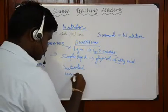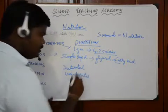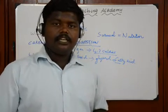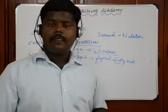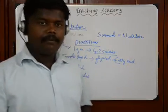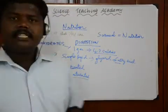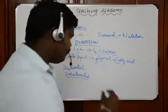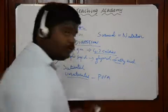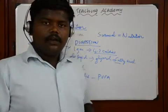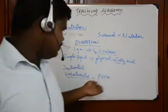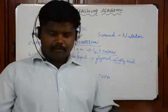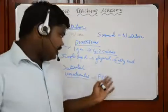Unsaturated lipids are rich in oils. Commercially, sunflower oil and safflower oil are becoming very popular because they are made up of unsaturated fatty acids. Unsaturated fatty acids are recommended for blood pressure patients by doctors and nutritionists because they can be more easily oxidized.